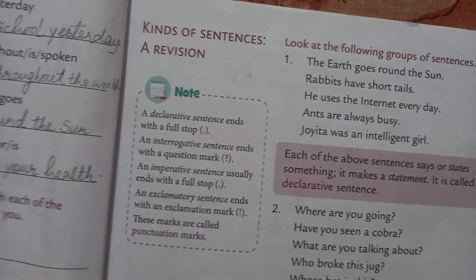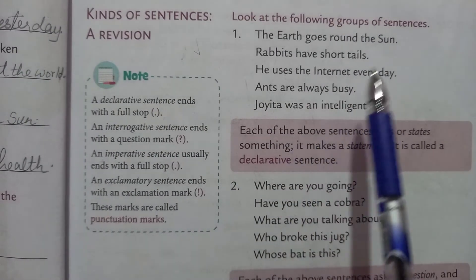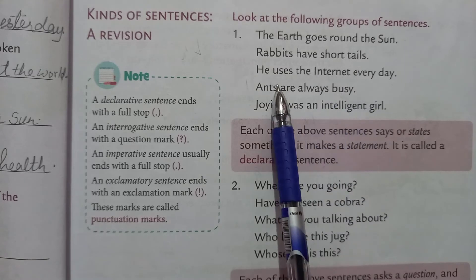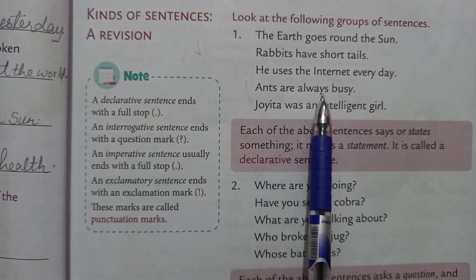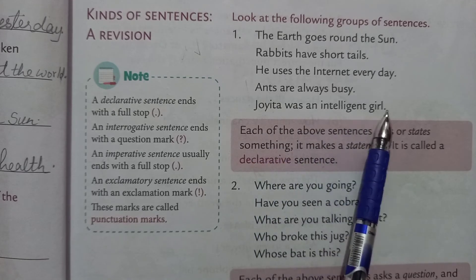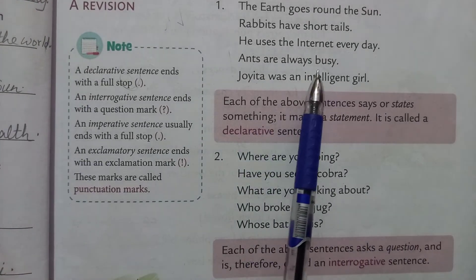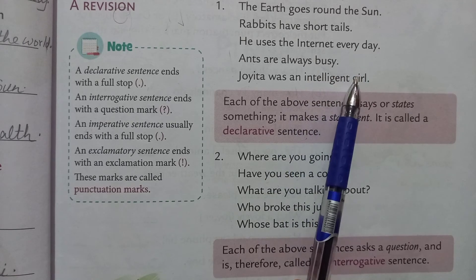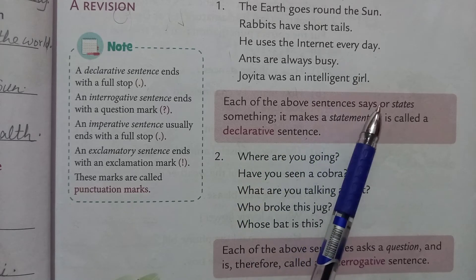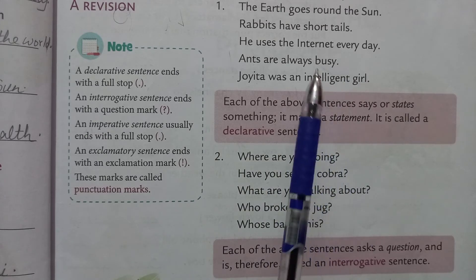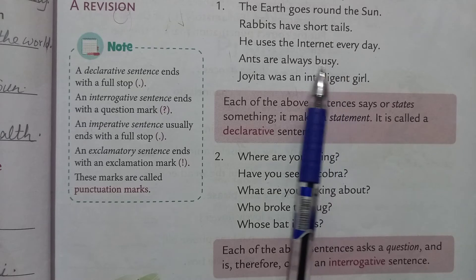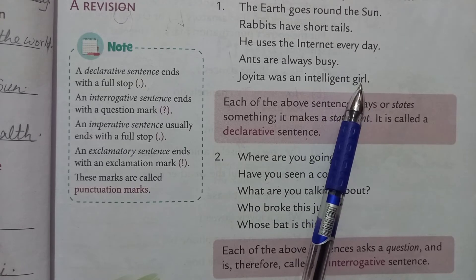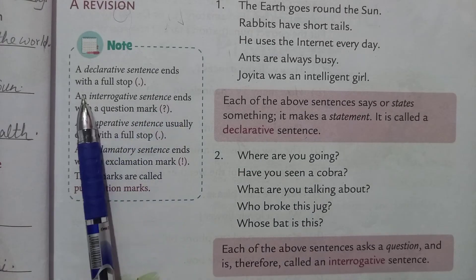Now see the kinds of sentences. Look at the following group of sentences: 'The earth goes round the sun. Rabbits have short tails. He uses the internet every day. Ants are always busy. Joita was an intelligent girl.' Each of these sentences says or states something — it makes a statement. So when a sentence says or states something, it is called a declarative sentence. A declarative sentence always ends with a full stop.